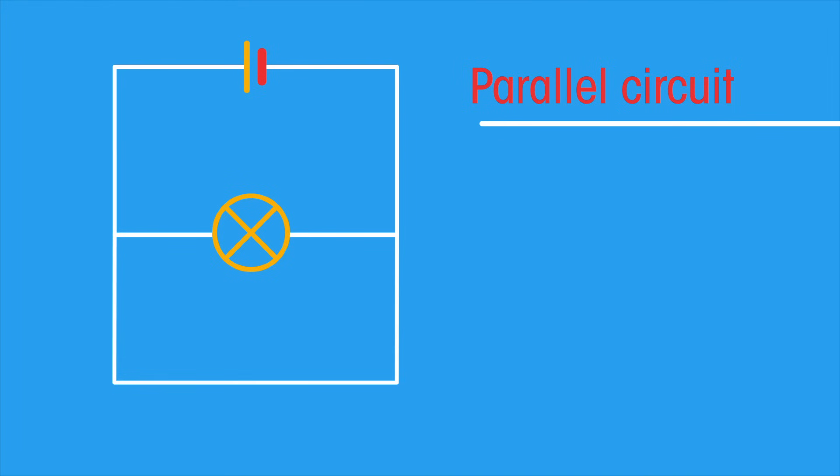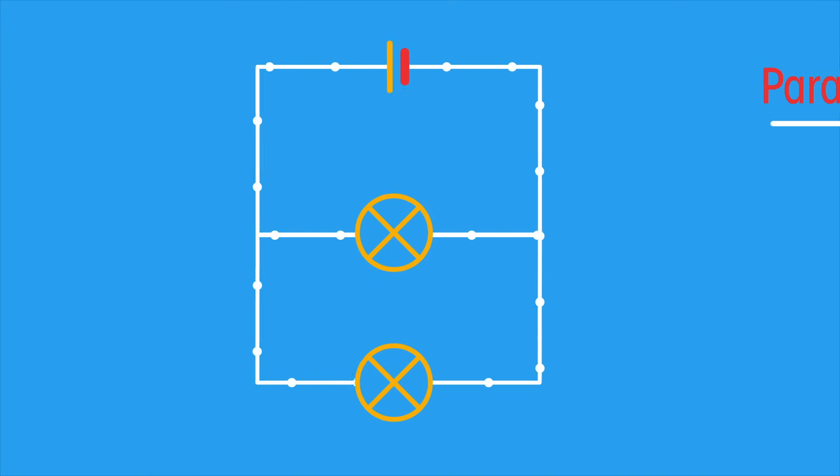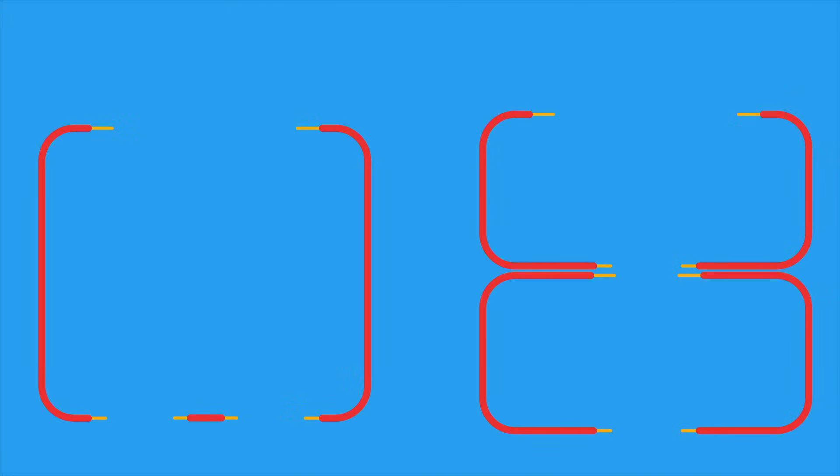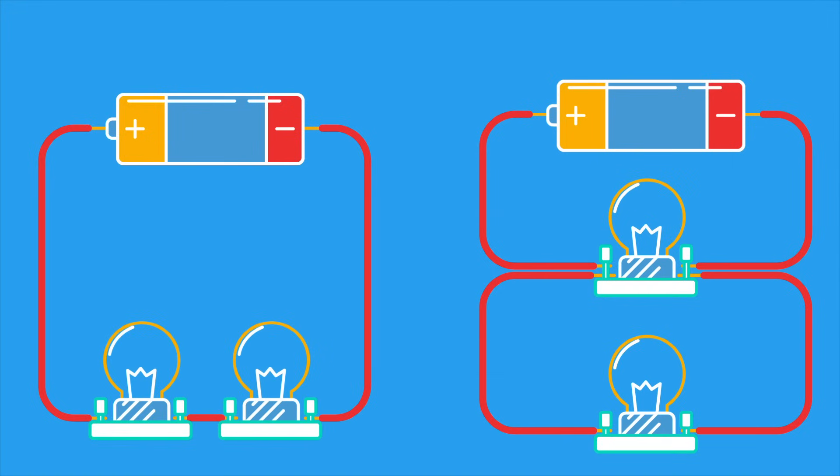In a parallel circuit, the components are connected side by side, so the current divides—some going one way and the rest the other way. Here's an example of two circuits, both containing a cell and two bulbs. One circuit is series, the other is parallel.